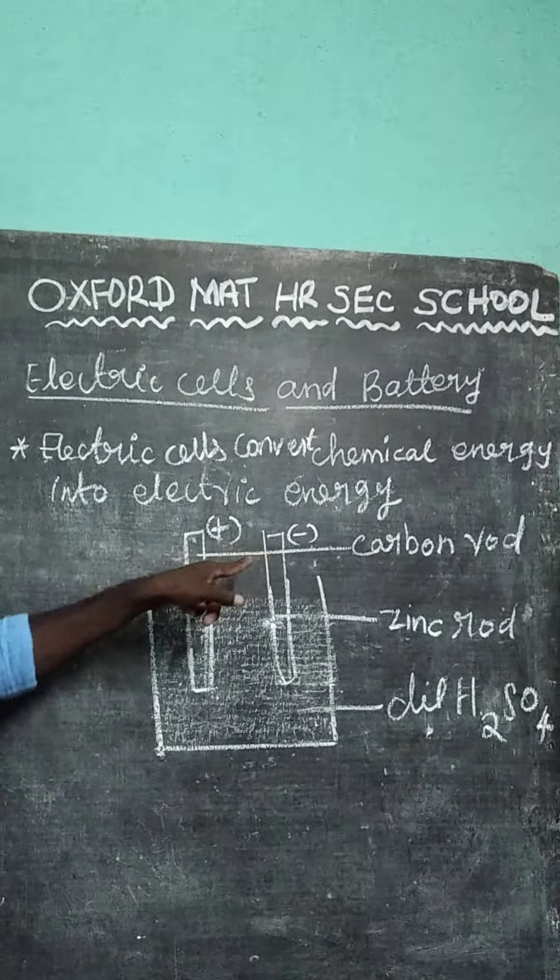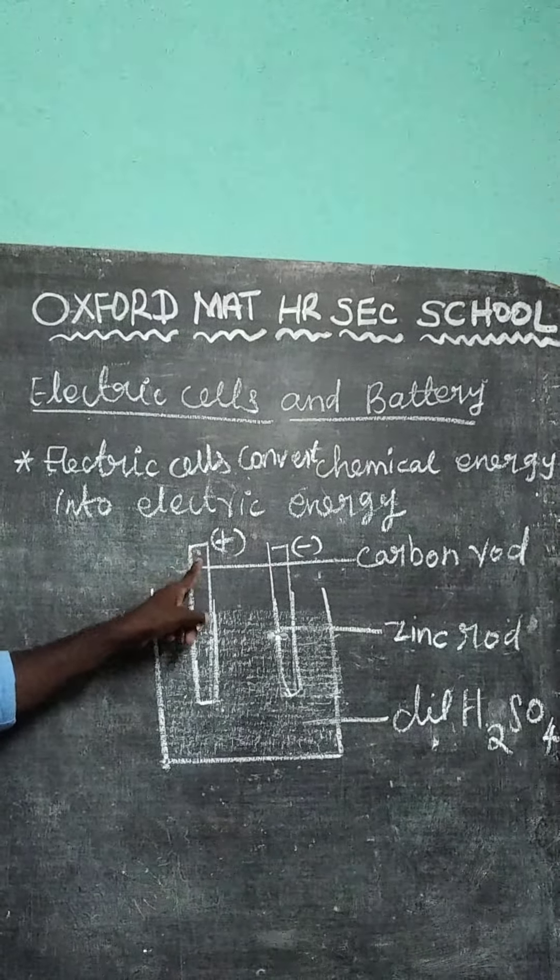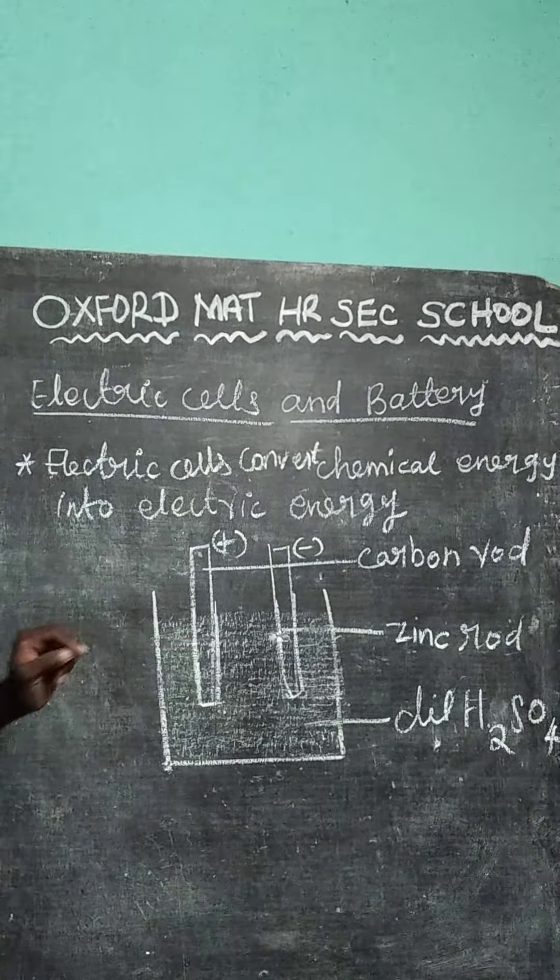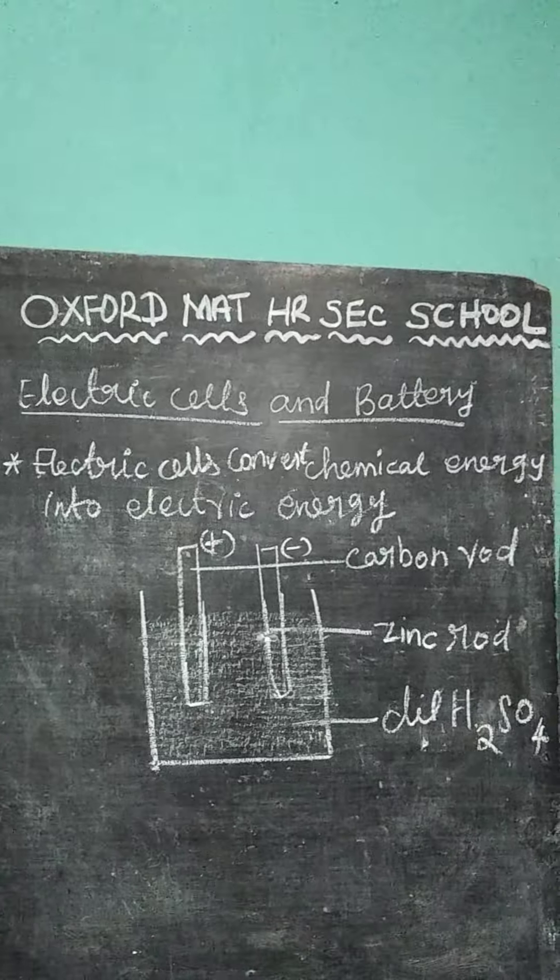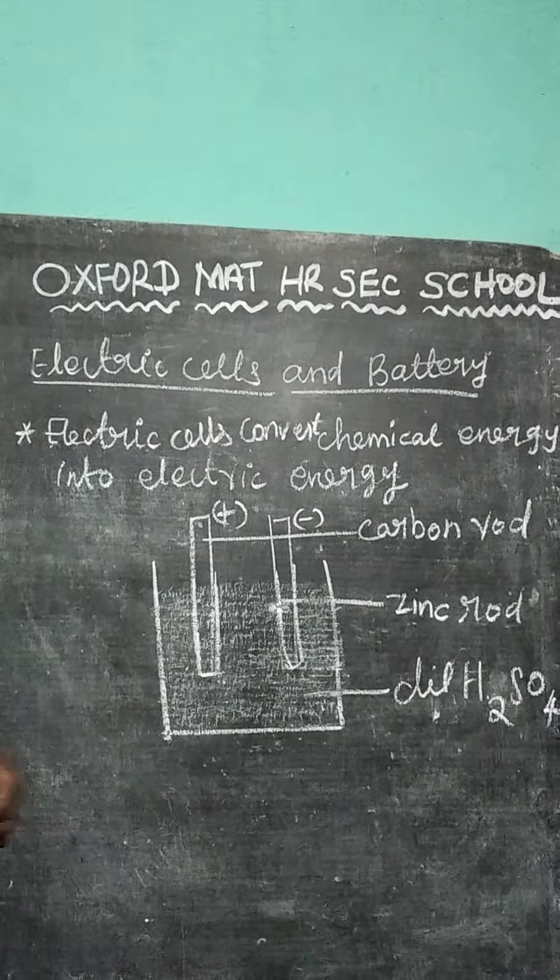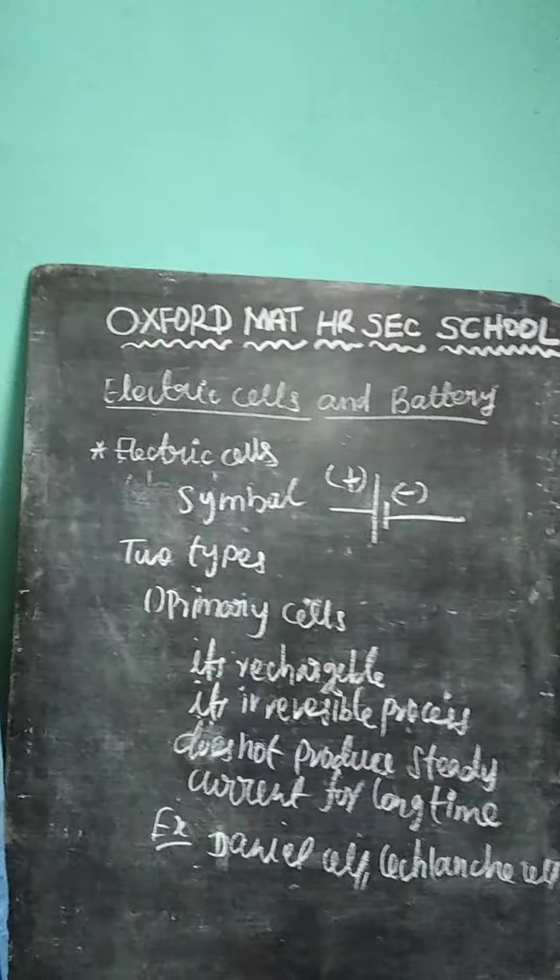Outside the circuit, it flows from positive terminal to negative terminal. Here developing potential difference. So electric cell gives potential difference.